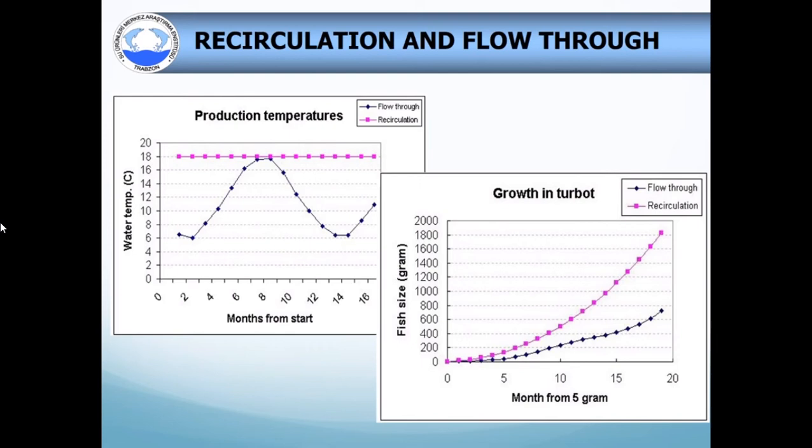Recirculation system and flow-through system. When it comes to meet the needs of optimum temperature, recirculating aquaculture system seems to have an upper hand on this topic. Here we see a comparison of growth in two systems, flow-through and recirculation. A precise temperature set to 18 degrees on recirculation increased growth significantly in 20 months and resulted in a difference of 1 kg. This is stable temperature on recirculation system. This is flow-through system, depending on changing temperature. And finally, the result is this.